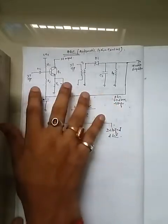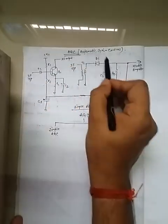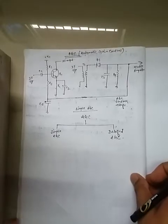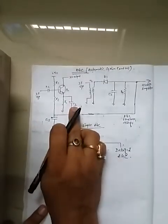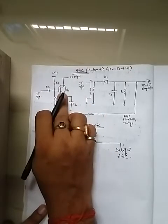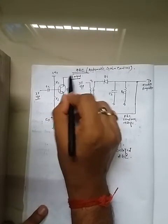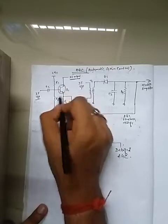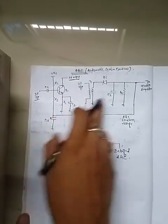Basically, the AGC circuit consists of two parts. One part is the IF amplifier and the second part is the peak detector. The peak varies according to the amplitude of the carrier signal. The IF amplifier consists of a transistor Q1 with biasing components R1, R2, C2, and R3. This common emitter transistor amplifier amplifies the IF signal, and the output is fed to the peak detector circuit.